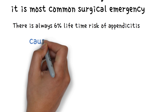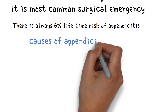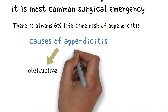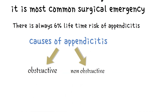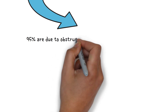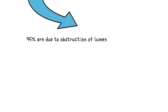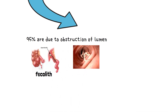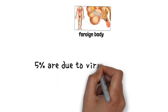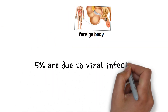Now we will see the causes of appendicitis. Causes of appendicitis can be obstructive and non-obstructive. 95% are due to obstruction of the lumen by fecalith, worms, stricture, and foreign body. 5% are due to viral infection.